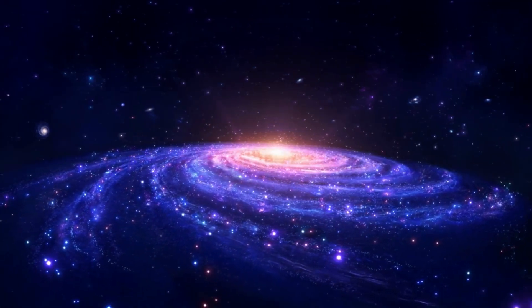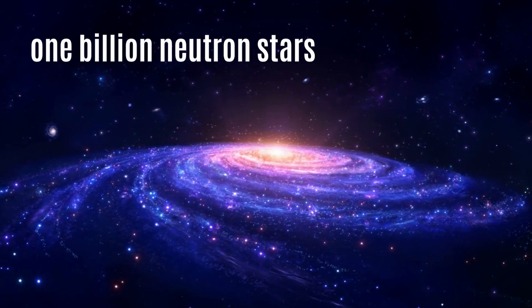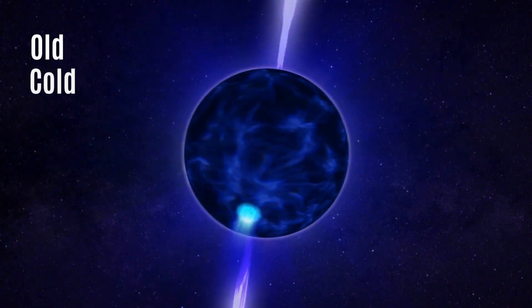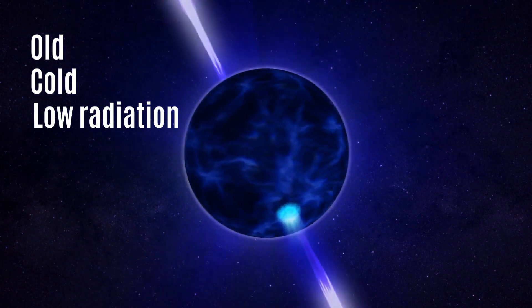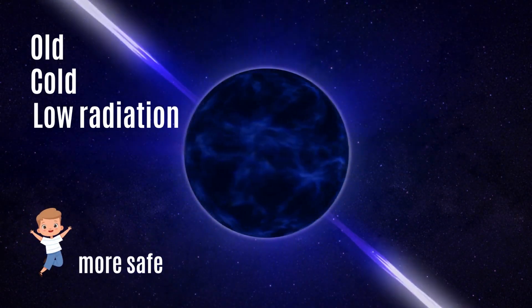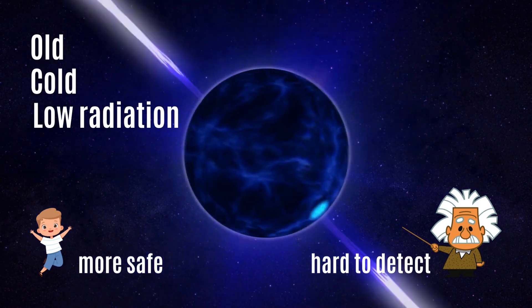In the Milky Way galaxy, around 1 billion neutron stars exist, but most are old, cold, and emit minimal radiation. Detecting slowly rotating stars that don't accrete matter is extremely challenging.